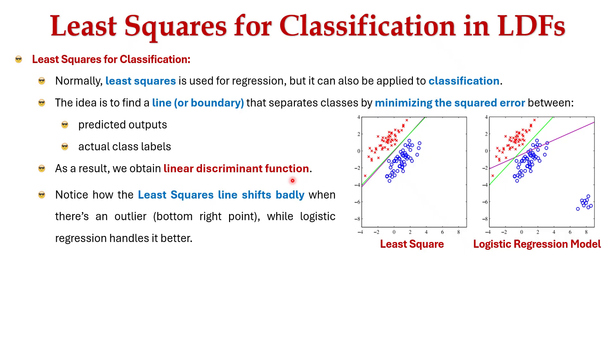Now let's notice how least square line shifts badly when there is an outlier, while logistic regression handles it better. Yes, least squares can classify, but logistic regression is more robust, especially with outliers.